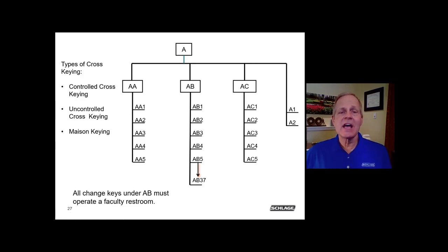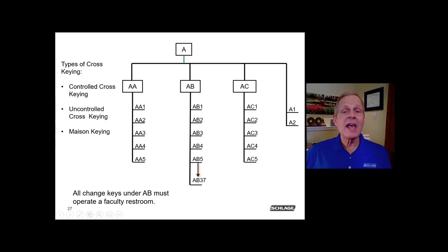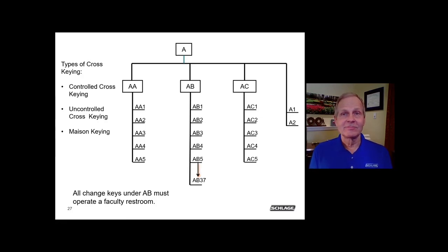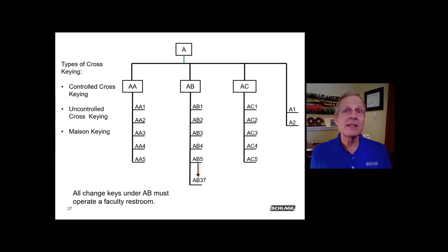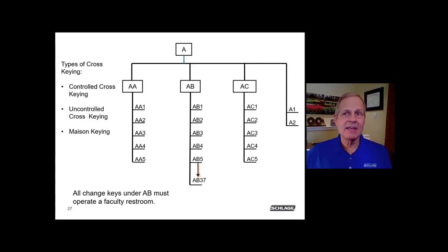Another example: all change keys under the AB master must operate a faculty restroom. This would be Maison keying — and you would also be correct calling it controlled cross-keying. This is an example where cross-keying is acceptable because the restroom is a non-security door. However, be aware that the cylinder will get significant extra wear from the added master pins required for cross-keying, which can make it more vulnerable to malfunction over time.